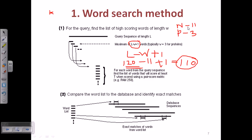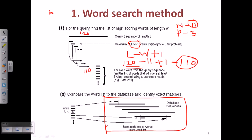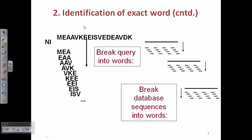This formula tells us that if the query sequence is 120 base pairs long, we must generate 110 short word segments, depending on our word search limit for nucleotides being 11. We then take these generated query words and compare them with the database to identify exact matches, looking through the database sequences for those exact matches.